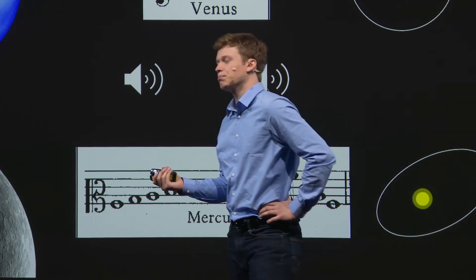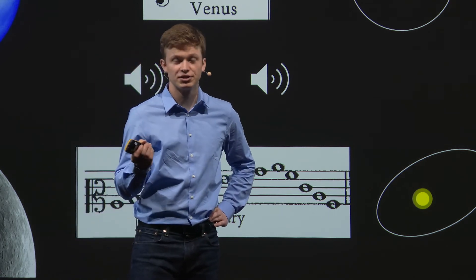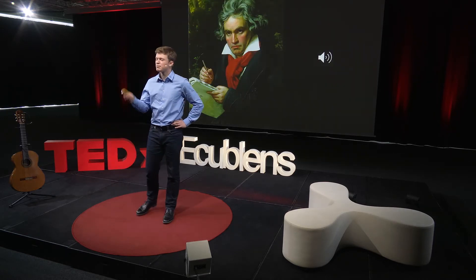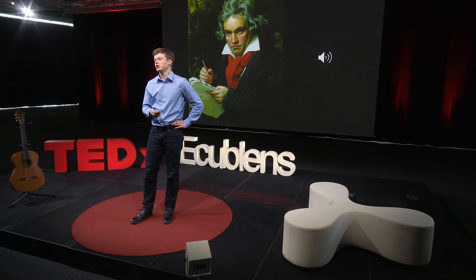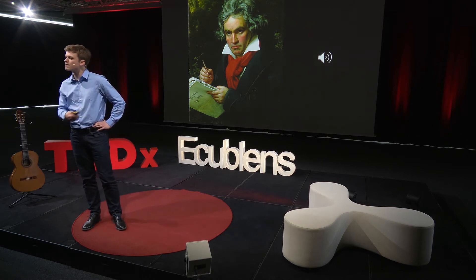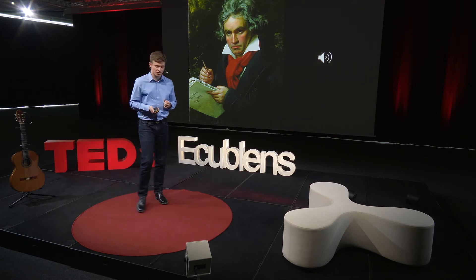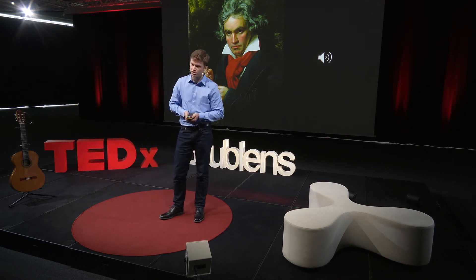But how could I compose music based on these seemingly dull and simple scales? What was my inspiration? Well, motives such as these scales have been a composer's obsession for centuries. The most famous example is probably Ludwig van Beethoven, with his famous fate motif that opens his fifth symphony. This motif is at the heart of the symphony, is found everywhere throughout the movement, and is the building block for the whole work. So just like Beethoven did with his work, I tried to use the Kepler scales as foundational blocks for the motivic development of my own pieces.